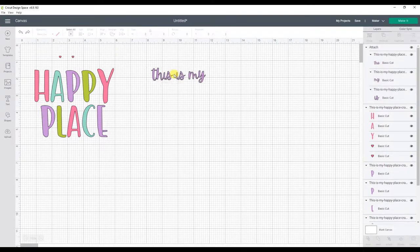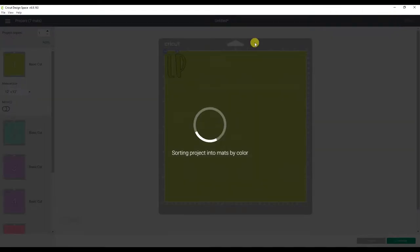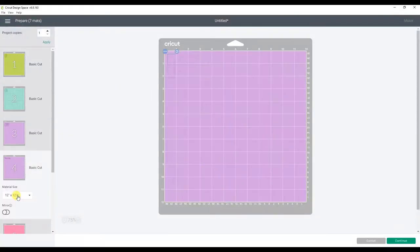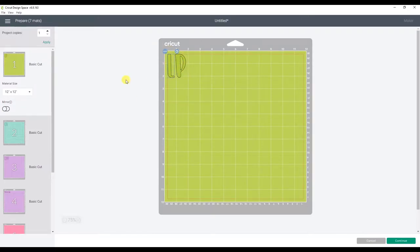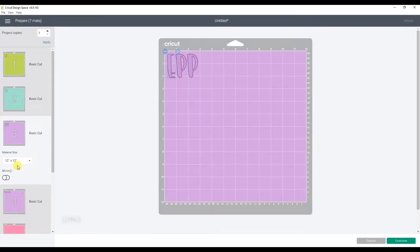Now you can see that those words stay together. So now we can click make it and start arranging our mat to cut. You can see each color is showing its own mat. You could absolutely cut the design this way if you wanted to. You would just cut each color one at a time. What I like to do to save time is actually load up all of the design onto one mat so that I can cut all of the colors at once.